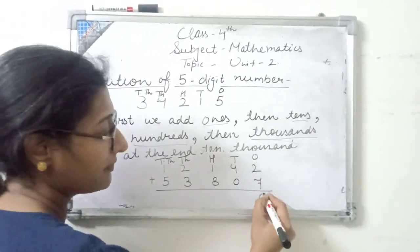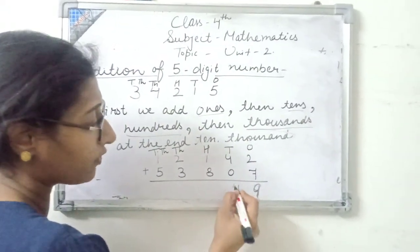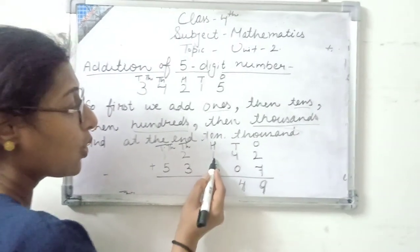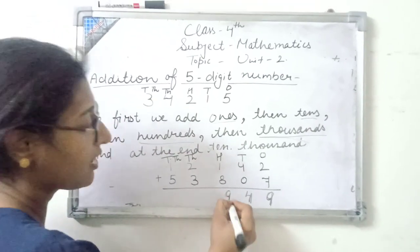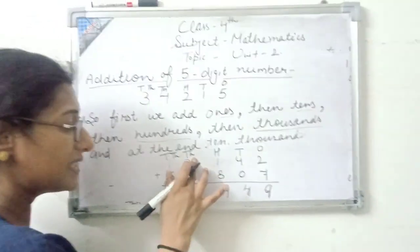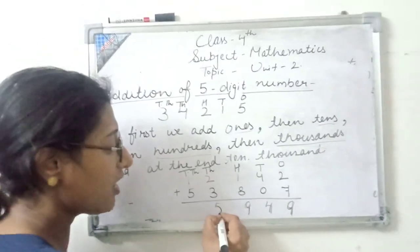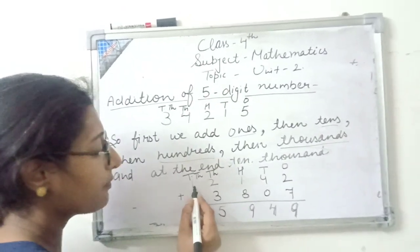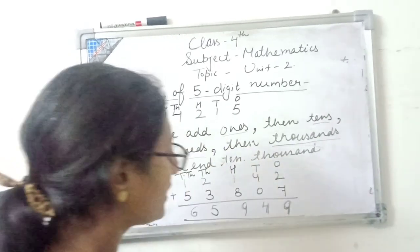After then 10th place digit: 4 plus 0, 4. After then 100th place digit: 1 plus 8, 9. After then 1000th place digit: 2 plus 3, 5. After then 10,000th place digit: means 1 plus 5, 6.